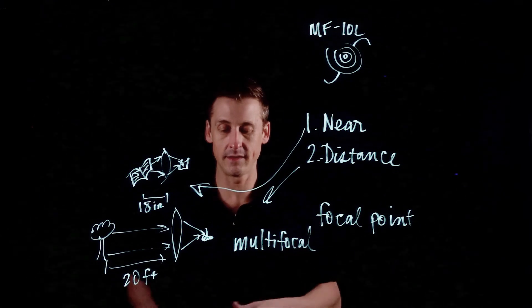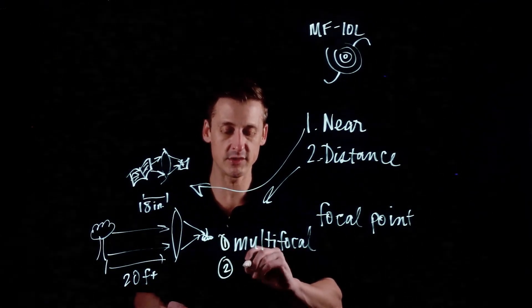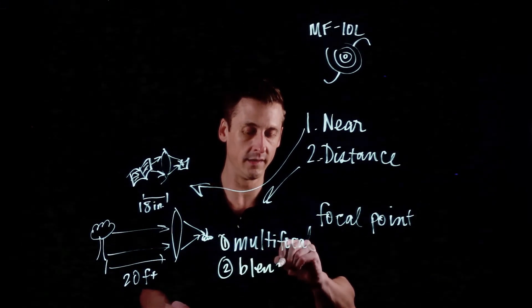So that's option number one for fixing near and distance. Option number two is something that we call blended vision.